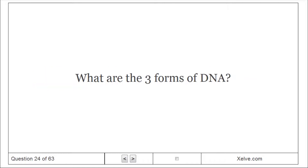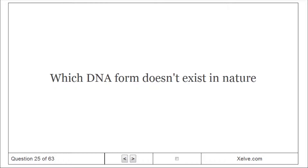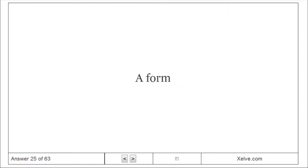What are the three forms of DNA? A, B, and Z. Which DNA form doesn't exist in nature? A-form.